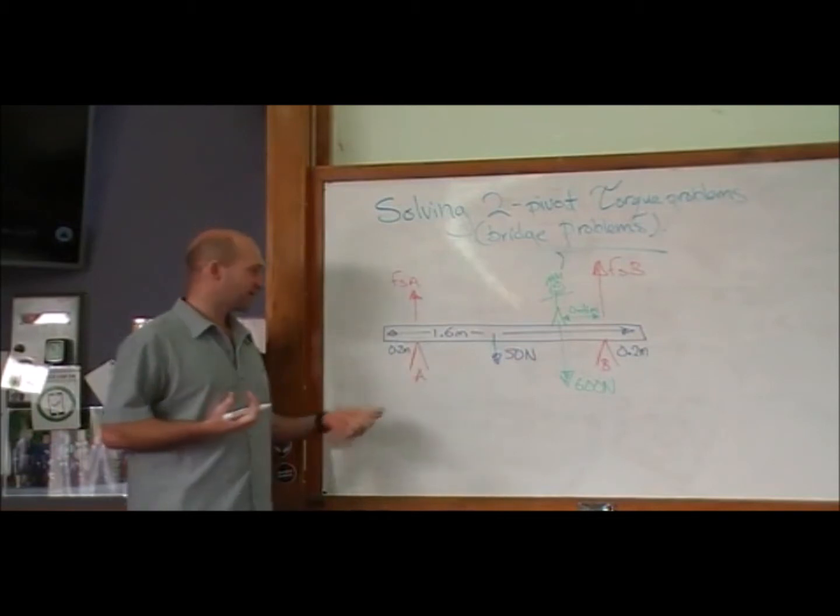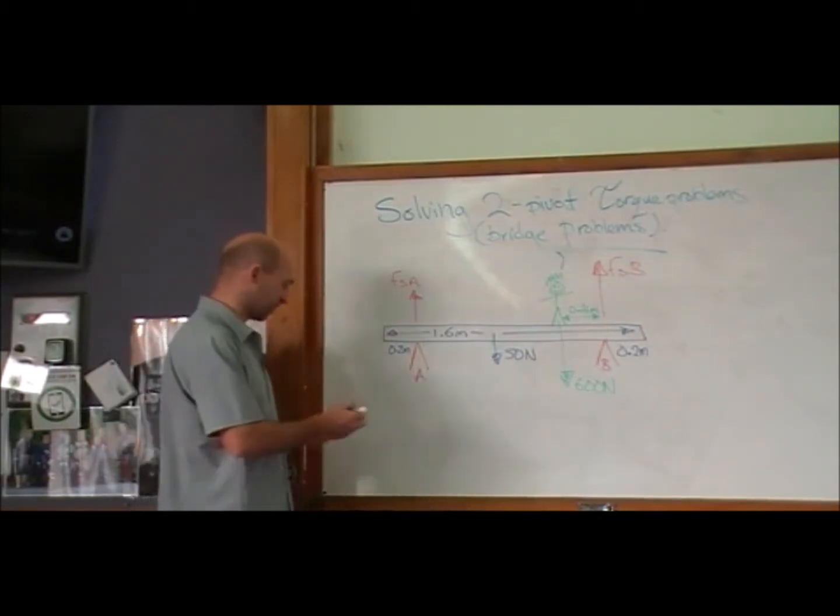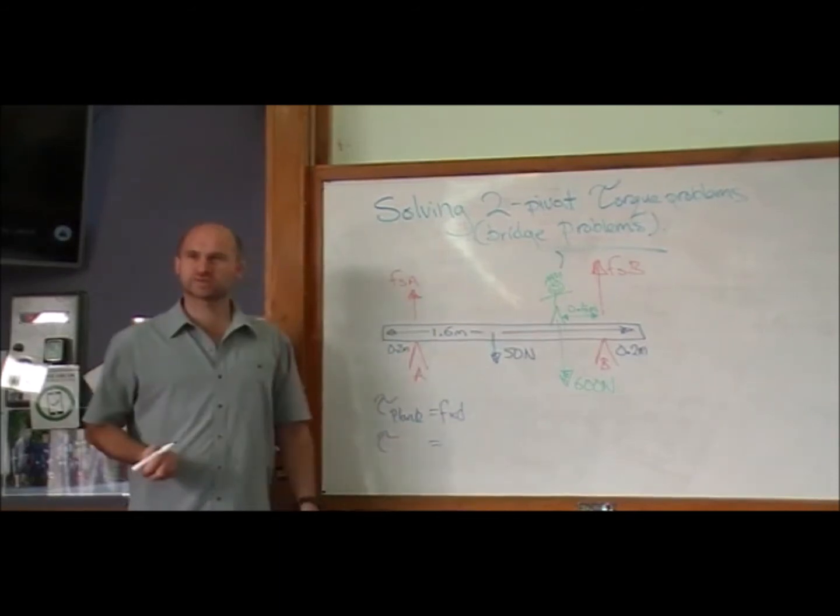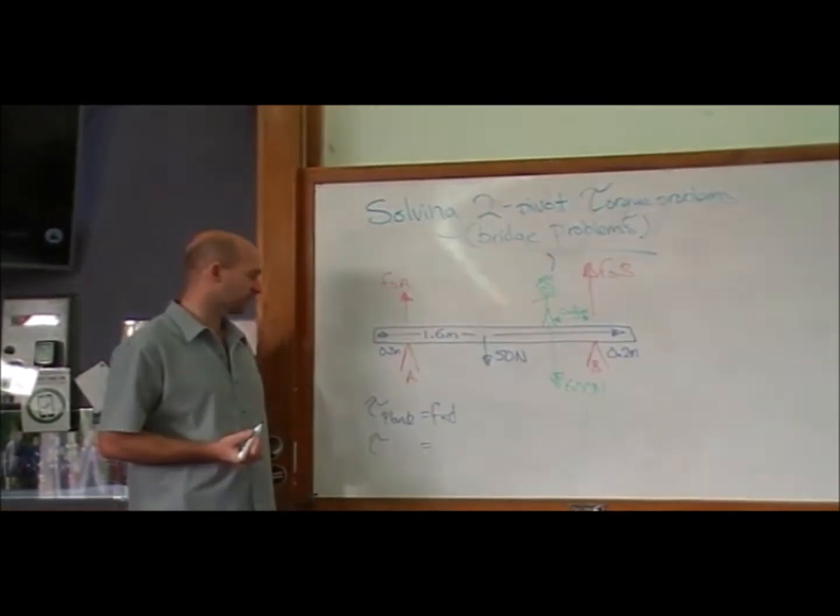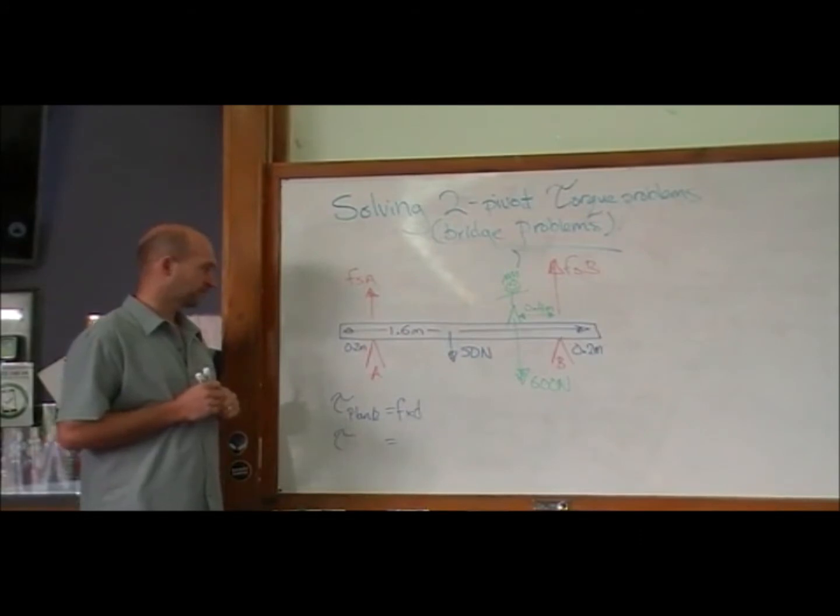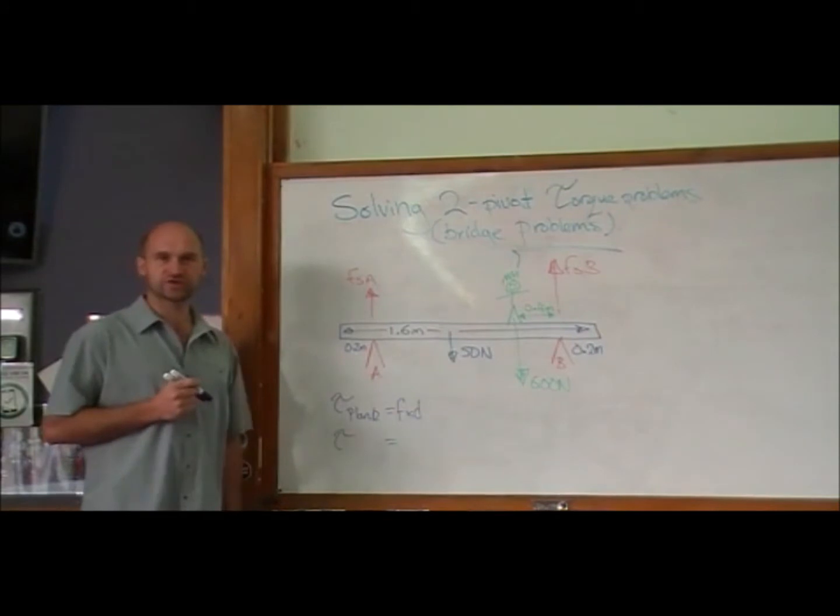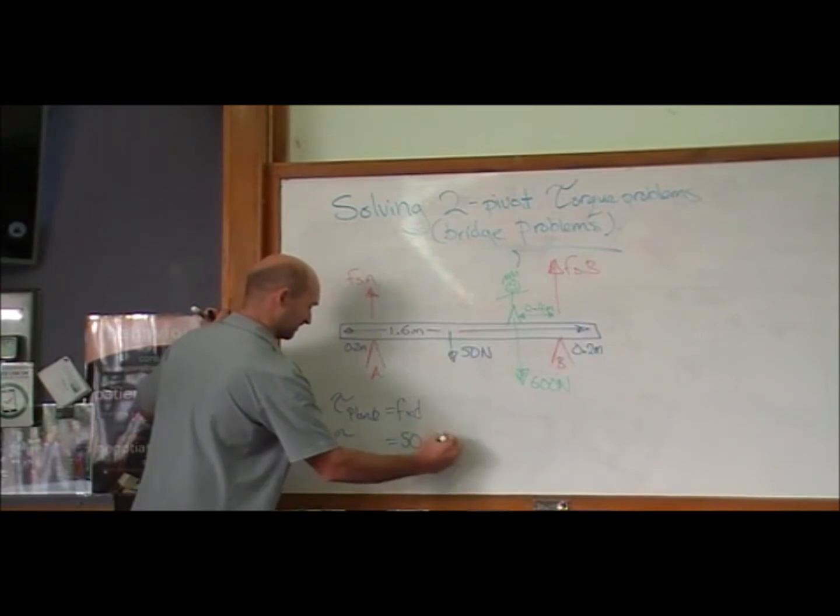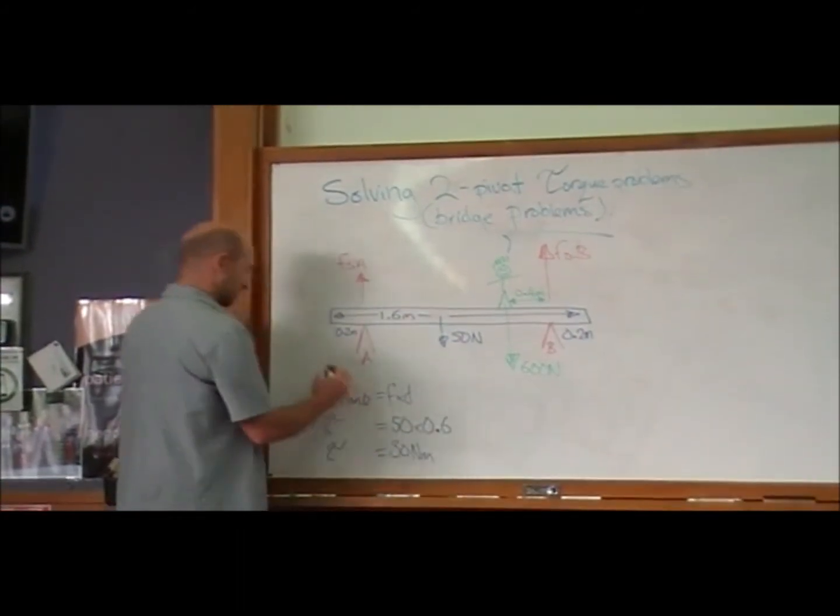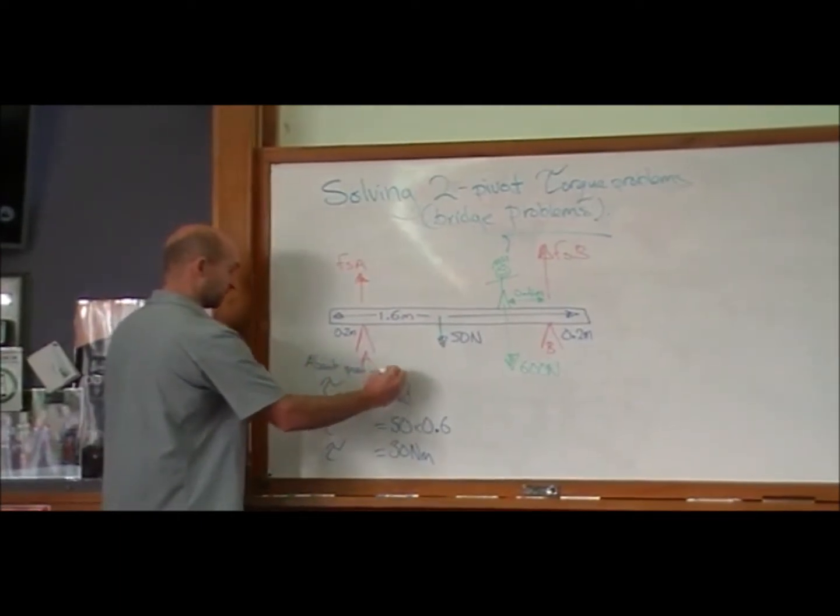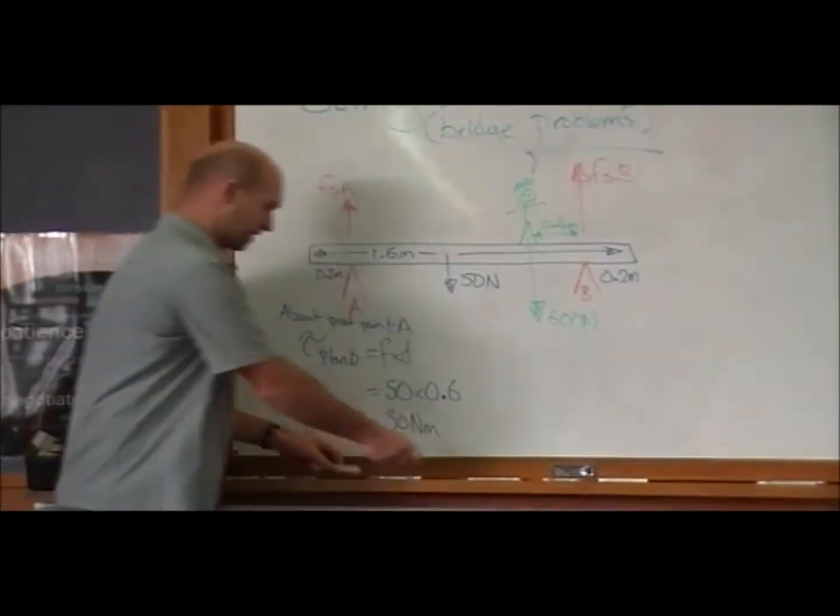I'm going to start by calculating the torques about one of the pivot points. The torque of the plank, force times distance. How much is our distance to the force of the plank from pivot point A? From pivot point A, how far are the 50 newtons, the force of the plank? 0.6, good. But how? Oh, it is 0.6. So this is the torque about pivot point A.